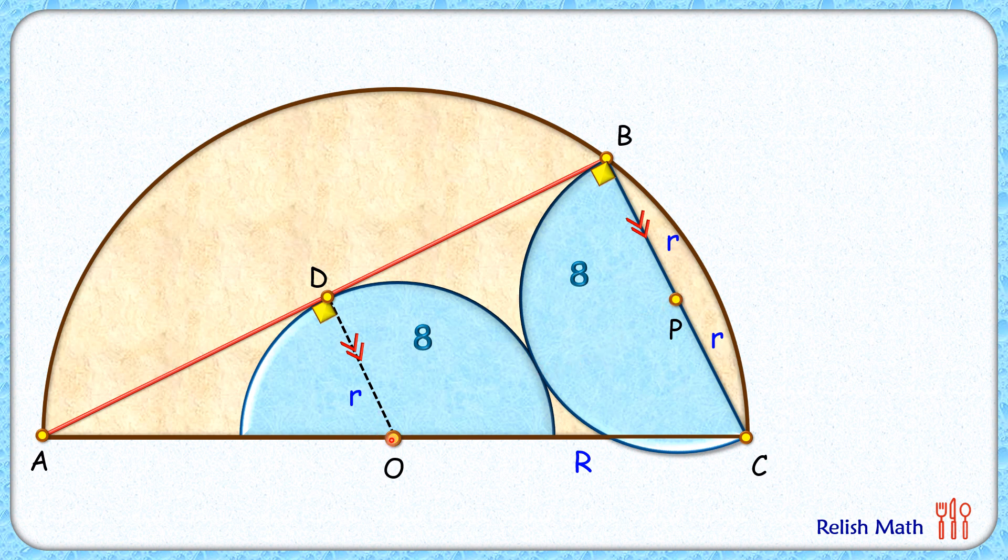Now here we know that with respect to this brown semicircle, from center we are joining the midpoint of chord BC. And by theorem, this line joining the midpoint of a chord is perpendicular to the chord.